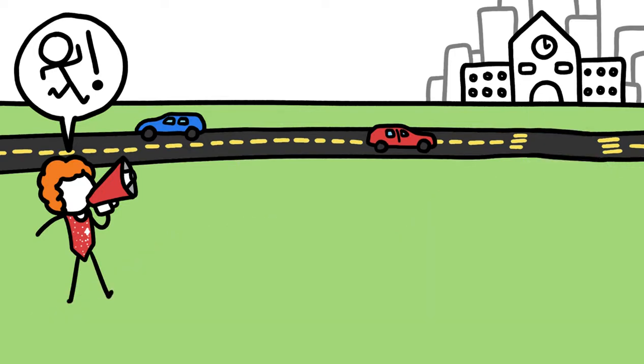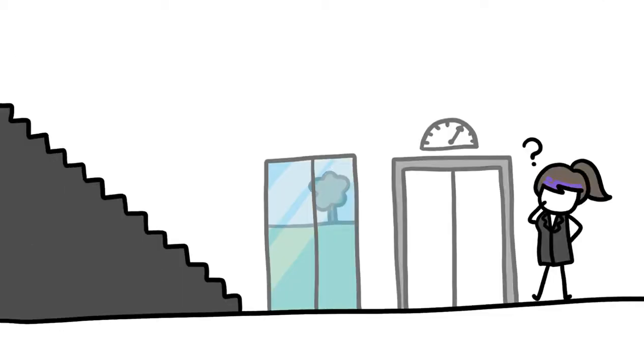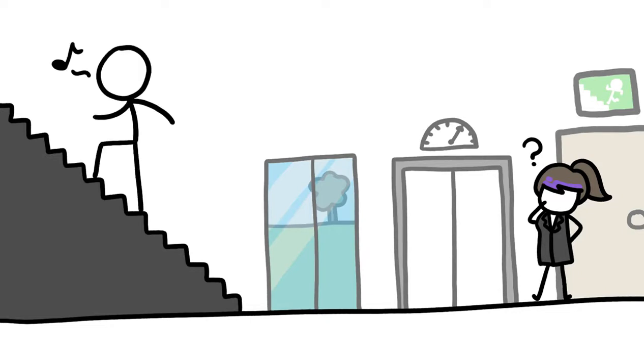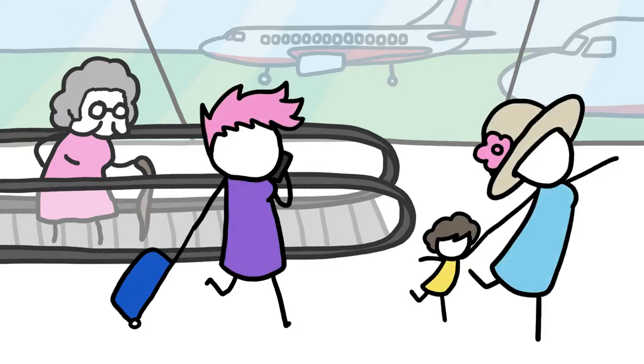If we built fewer roads and more paths, it would be easier for people to use their own power to get to school or work. If we put stairways at the main entrance to buildings rather than hiding them in a back corridor, more people would use them rather than elevators. If our airports had fewer human conveyor belts, more people would walk.